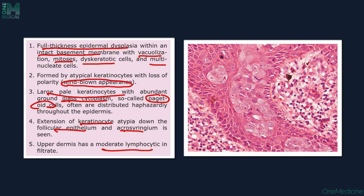If there is diagnostic doubt, biopsy and histopathology are essential. The most important histopathological features are full-thickness epidermal dysplasia, keratinocytes with lost polarity, wind-blown appearance, pagetoid cells, giant cells, mild inflammatory infiltrate in the upper dermis, and involvement of both acrosyringium and acrotrichium — meaning hair follicles and sweat glands are involved. When Bowen's disease occurs on the glans penis, it is called erythroplasia of Queyrat.